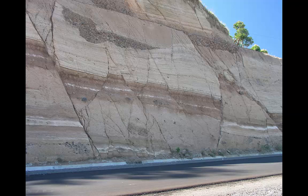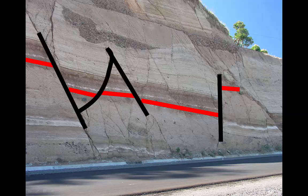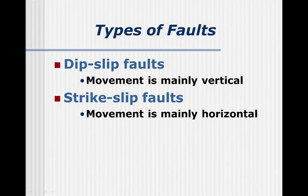If a rock is exposed to stress and doesn't bend, it can break. Faults are places where rocks have broken and there has been movement along the break. At this road cut, we see layers that stand out because of color differences. A white bed is offset along fault lines. We classify faults by their relative motion. Faults in which rocks have mainly moved up or down are dip-slip faults. If the movement is mainly horizontal, it's a strike-slip fault. It's rare for a fault to show only vertical or only horizontal movement, but this simplifies talking about them.